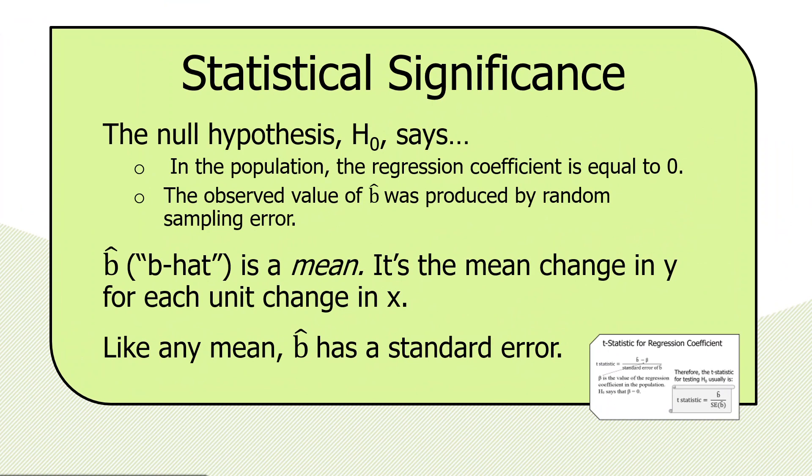Because, like any mean, b-hat has a standard error associated with it. So if we get a value for a regression coefficient, we know that that's a point estimate. But there's a bandwidth around which the true value of b can vary depending on how much standard error is contained in our estimate.